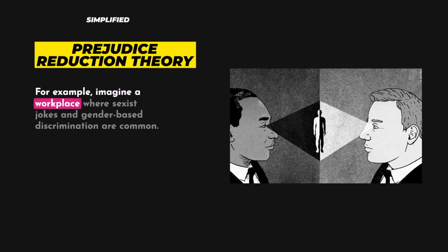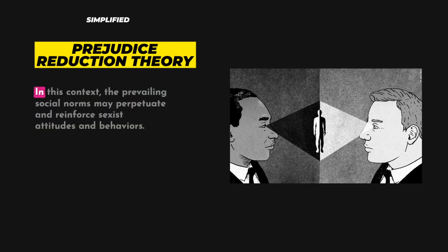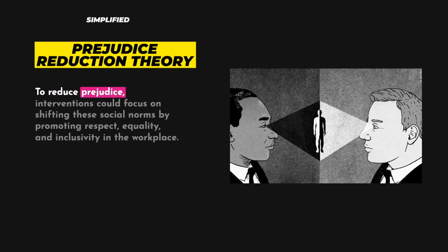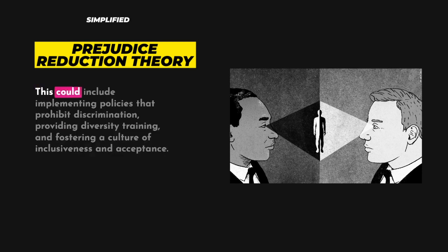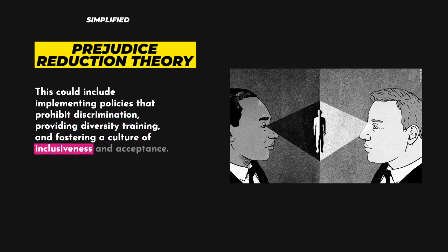For example, imagine a workplace where sexist jokes and gender-based discrimination are common. In this context, the prevailing social norms may perpetuate and reinforce sexist attitudes and behaviors. To reduce prejudice, interventions could focus on shifting these social norms by promoting respect, equality, and inclusivity in the workplace. This could include implementing policies that prohibit discrimination, providing diversity training, and fostering a culture of inclusiveness and acceptance.